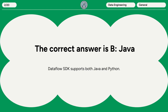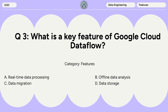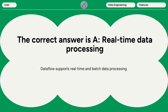Question 3: What is a key feature of Google Cloud Dataflow? A. Real-time data processing. B. Offline data analysis. C. Data migration. D. Data storage. The correct answer is A. Real-time data processing. Dataflow supports real-time and batch data processing.